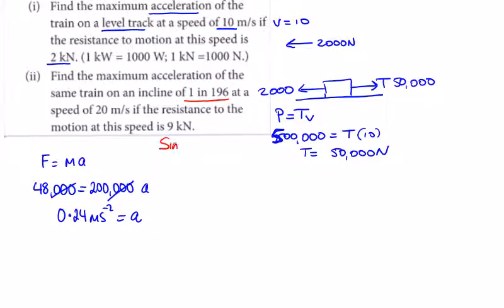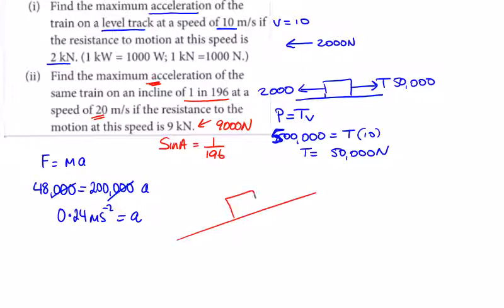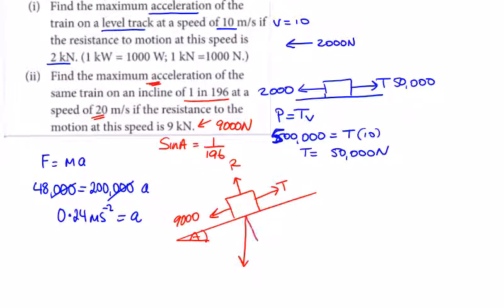In part two we're given an incline of 1 in 196, so sine a equals 1/196. We're asked to find the max acceleration again. Speed is 20 and resistance is 9 kilonewtons, that's 9,000 newtons. Drawing a diagram going up a hill inclined at angle a: we have normal reaction, tractive effort, and resistance to motion of 9,000 newtons.